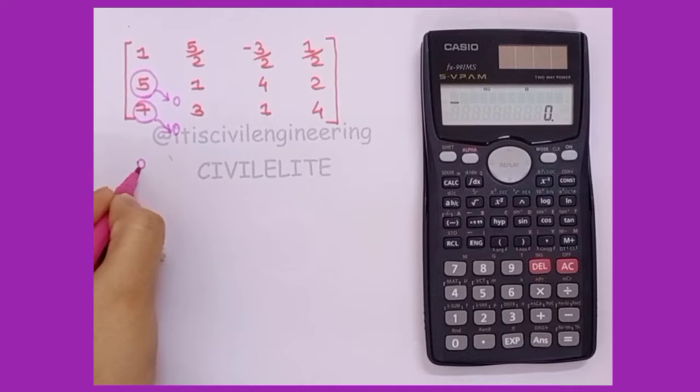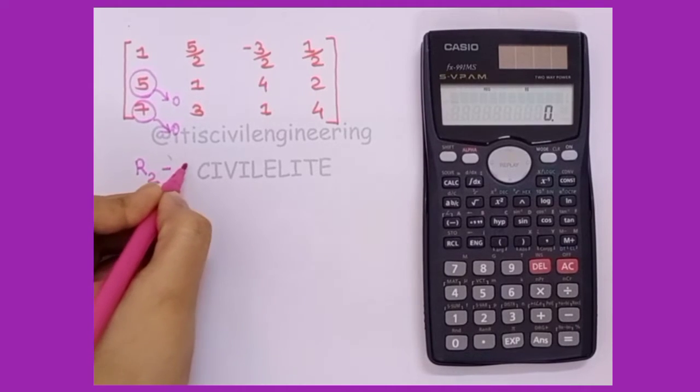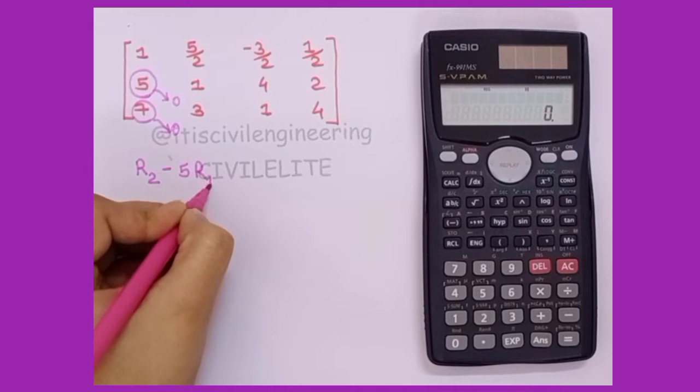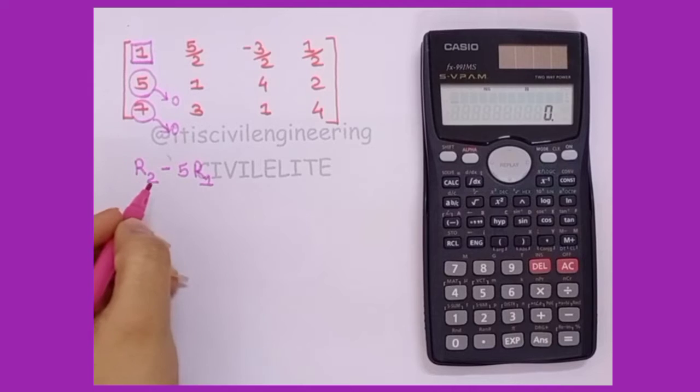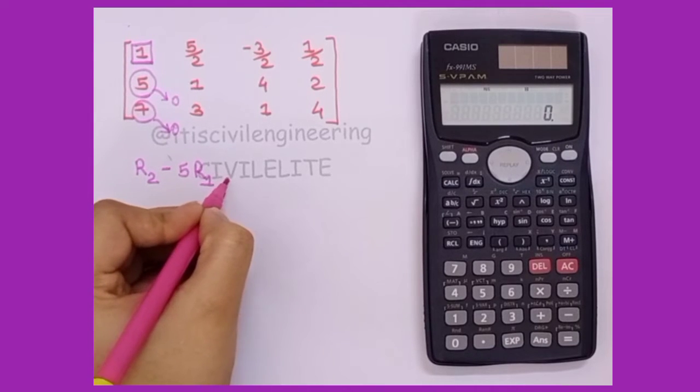So the row transformation that we will perform is r2 minus 5r1, because multiplying 1 with 5 it will be 5, and 5 minus 5 is 0.